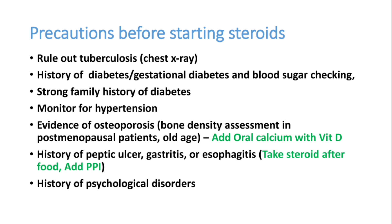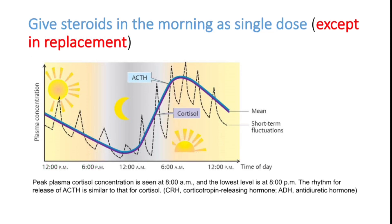Many doctors give steroids morning and evening, but split dosing should only be done when giving a replacement dose for adrenal insufficiency. Otherwise, if giving it as an anti-inflammatory drug, only one dose is enough, and it should be given in the morning time. Steroids are secreted in the early morning hours; if you give a nighttime dose, it can suppress the morning surge of steroid secretion. So try to avoid a night dose of steroid in routine treatment. In asthma, COPD, rheumatoid arthritis, SLE — all these conditions — you can give steroid as a single dose tablet in the morning.